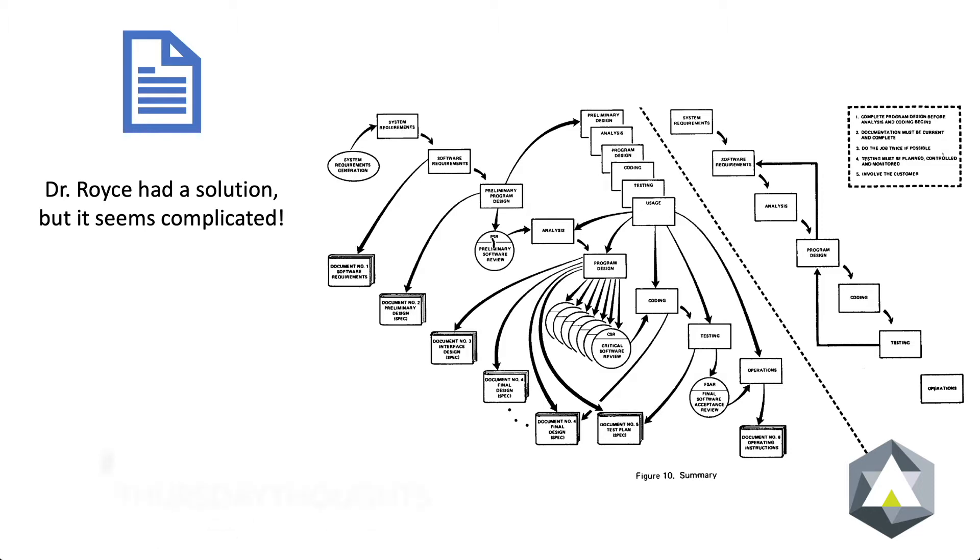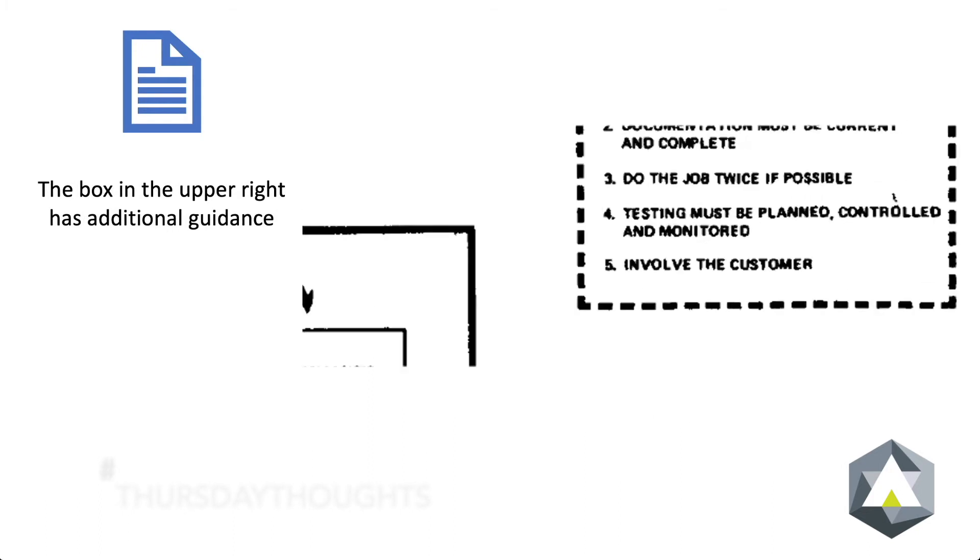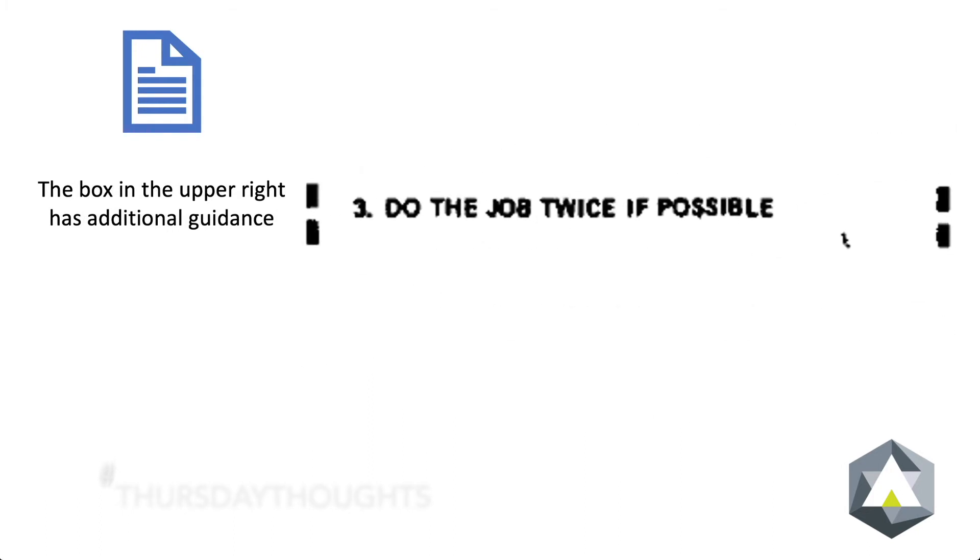The box in the upper right gives some additional guidance. One piece of that guidance stands out. Do the job twice if possible.